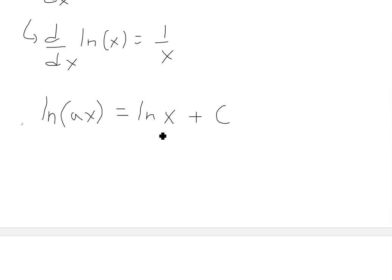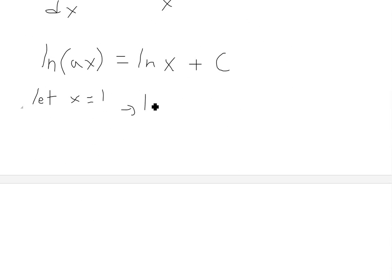And now, to solve for what the C constant is, if we just let x equal 1, we can just plug that in and we'll get ln(a) equals ln(1) plus C, and ln(1) is just 0. So we get ln(a) equals C.